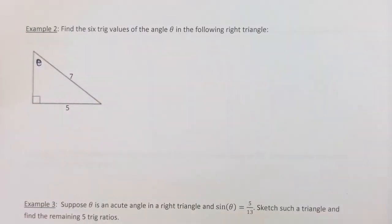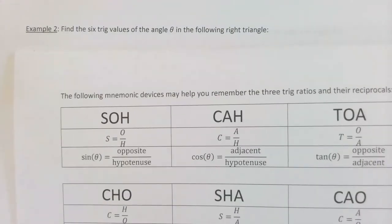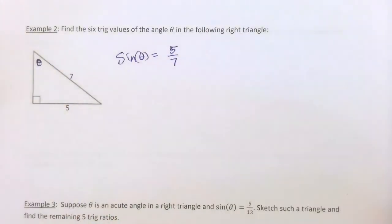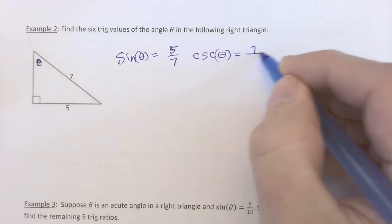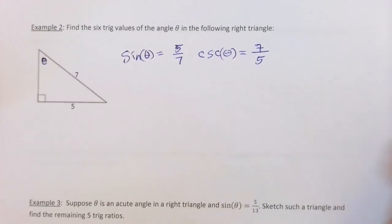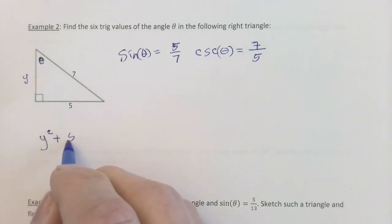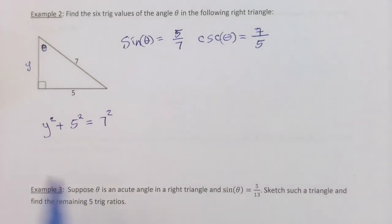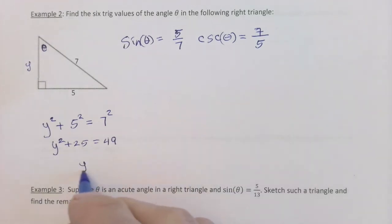We can already compute sin(θ) = opposite/hypotenuse = 5/7, and csc(θ) = 7/5. But for the remaining four ratios we need the adjacent leg. Label it y and apply the Pythagorean theorem: y² + 5² = 7², which gives y² + 25 = 49, so y² = 24.